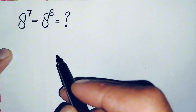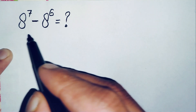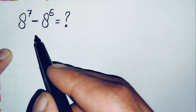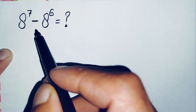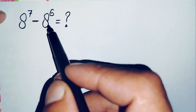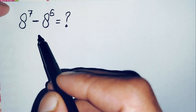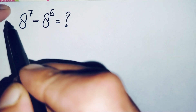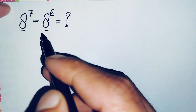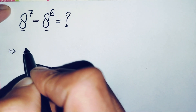Hello everyone, you are welcome to Math Explorer. In this video, I'm going to solve and find the value of this interesting simplification math problem, which is 8 raised to power 7 minus 8 raised to power 6. First of all, we will change these two bases to exponential form, so we can write 8 as 2 cubed, or 2 raised to power 3.